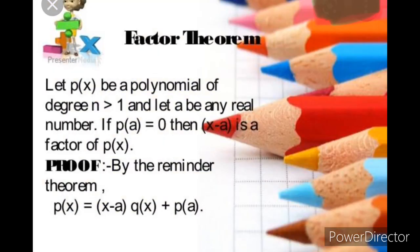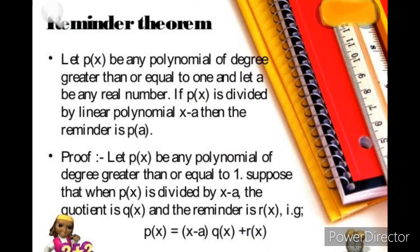Now, we are coming to our next part, that is factor theorem. These theorems are useful for solving the problems. See here, what is factor theorem? Let p(x) be a polynomial of degree n greater than 1 and let a be any real number. If p(a) equals to 0, then x minus a is a factor of p(x). This proof is done with the help of a remainder theorem. That is p(x) equals to (x minus a)q(x) plus p(a). Just the theorem is necessary, no need of the proof. Next, our last one, last topic.